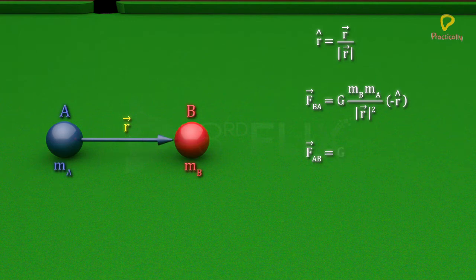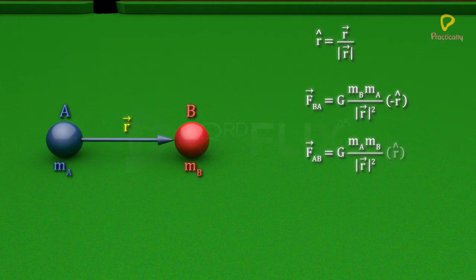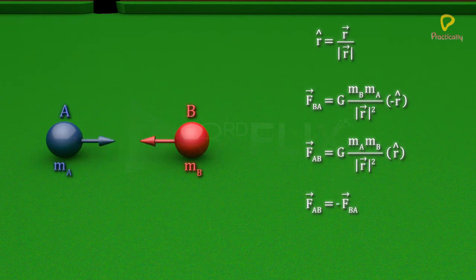You may observe that the force on A due to B and the force on B due to A constitute an action-reaction pair. There is no change in the gravitational force that exists between the two masses due to the presence of other masses in the vicinity.